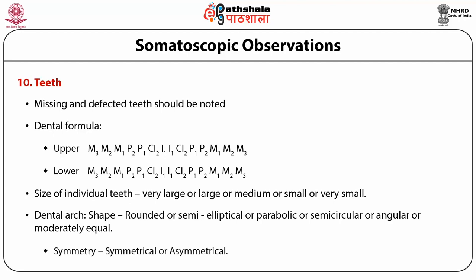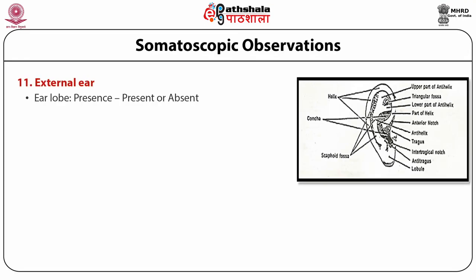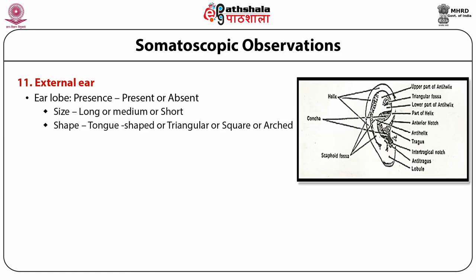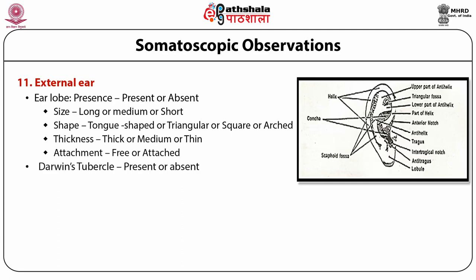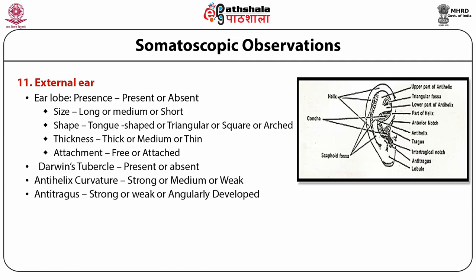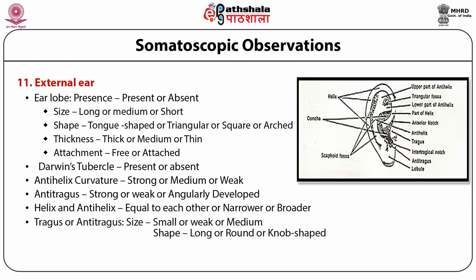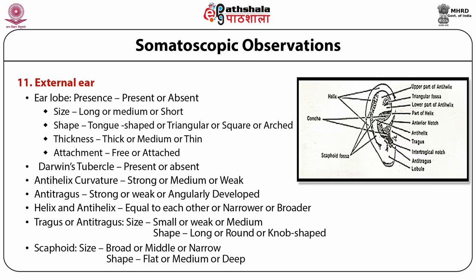External ear — lobe: presence (present or absent); size (long, medium, or short); shape (tongue-shaped, triangular, square, or arched); thickness (thick, medium, or thin); attachment (free or attached). Darwin's tubercle: present or absent. Anti-helix curvature: strong, medium, or weak. Anti-tragus: strong, weak, or angularly developed. Helix and anti-helix: equal to each other, narrower, or broader. Tragus or anti-tragus size: small, weak, or medium; shape (long, round, or knob-shaped). Concha: size (broad, middle, or narrow); shape (flat, medium, or deep).